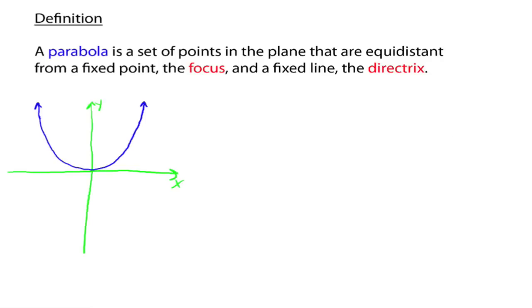Here is a parabola with vertex at the origin. The focus is actually inside your parabola — we'll call it f. The focus is up here, and the line down here is called the directrix. This distance and this distance are to be the same — from the vertex to the focus, and from the vertex down to the line. We're going to call that distance c.